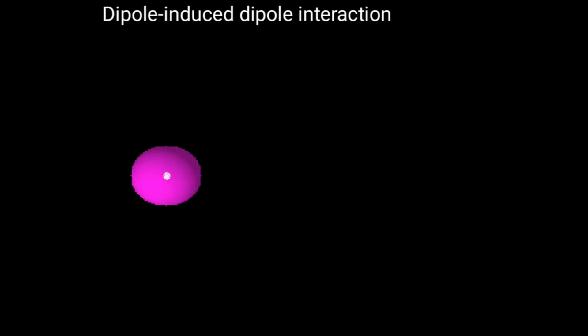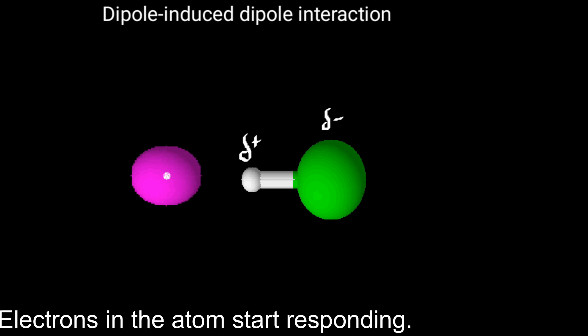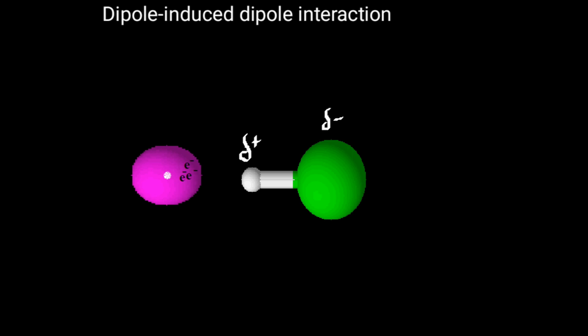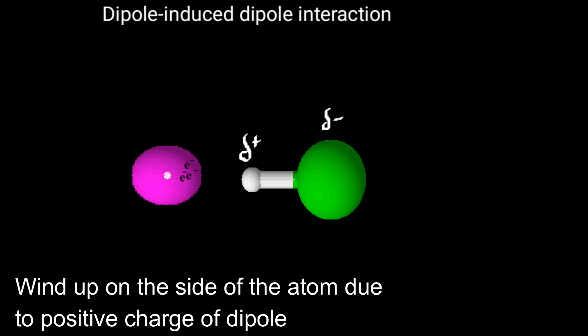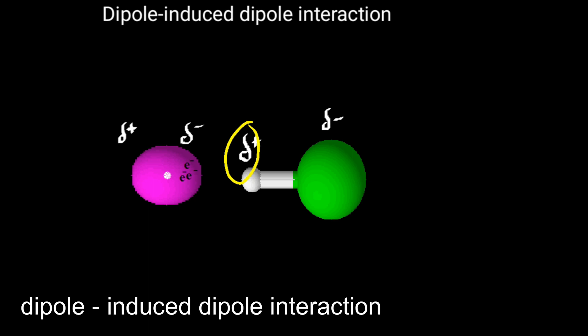Next is dipole-induced dipole interaction. This happens when a dipole approaches an atom with no dipole. When a dipole approaches this atom, the electrons in the atom start responding and wind up on one side of the atom due to the positive charge, causing the atom to develop a dipole. So a dipole-induced dipole interaction takes place.